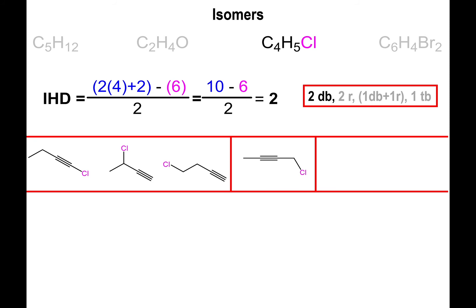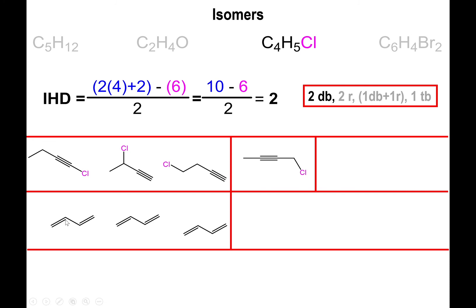Now let's look at two double bonds. Draw four carbons and then input two double bonds — one followed by another. We can place the chlorine in different positions: on the far left end, or in the middle. Placing it on the third carbon brings you back to the same molecule, and placing it on the far right also gives one of the molecules already drawn.